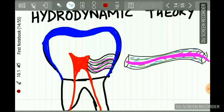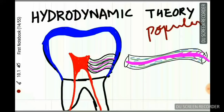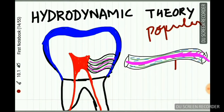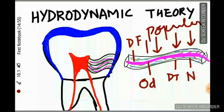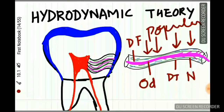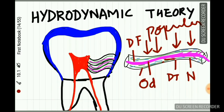The second and most popular theory is the hydrodynamic theory. The dentinal tubule contains the odontoblastic process, nerves, and also a fluid called dentinal fluid. When any stimulus such as caries or a restorative procedure acts on the tooth, there is movement of the dentinal fluid inside the dentinal tubule. This movement of fluid irritates the nerve fibers and causes pain. This is the most acceptable and popular theory.